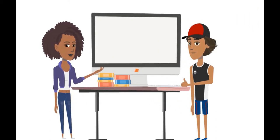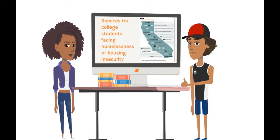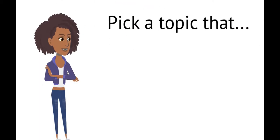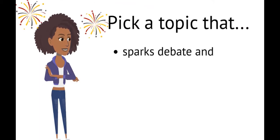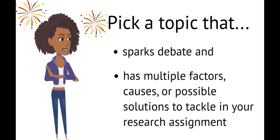A big part of why we do research is to find the best ways to solve societal problems, treat diseases, or understand historical events. And most of these issues don't have one clear cause, solution, or correct analysis. Pick a topic that sparks debate and has multiple factors, causes, or possible solutions that you can tackle in a research assignment.